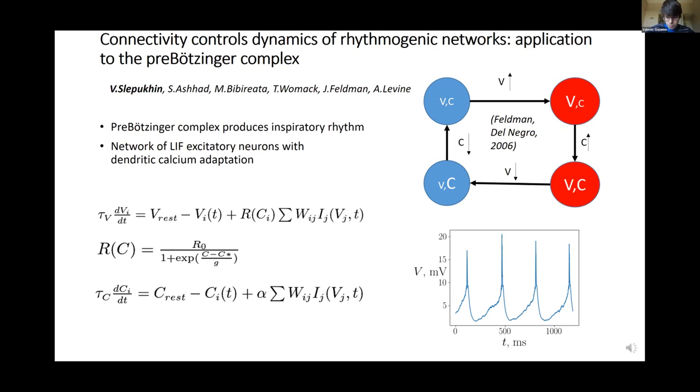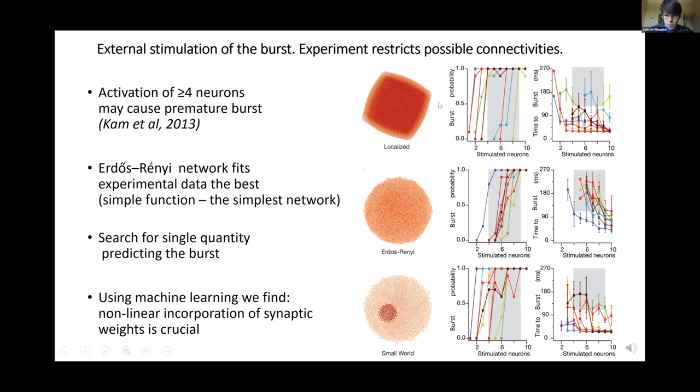To compare it with experiments, we study a very simple experiment on external stimulation of the burst, where the preBötzinger complex is quite sensitive, which means you activate just four or a little bit more neurons out of one thousand, and it already produces the burst before the time it was supposed to happen.